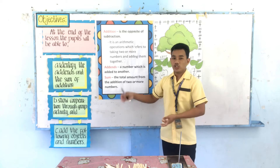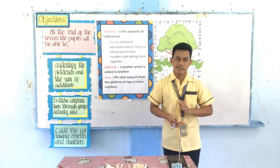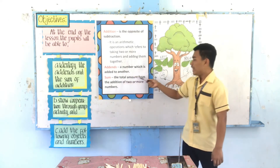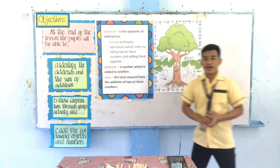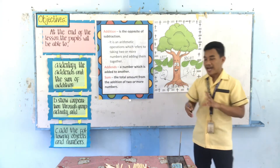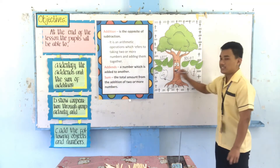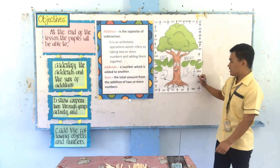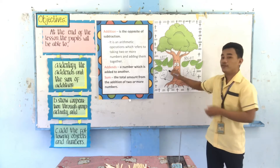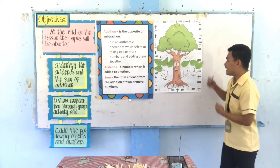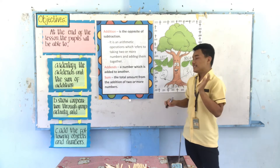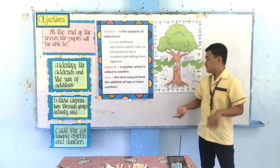Now, another one. In addition, there is what we call the sum. What is sum? Sum is the total amount from the addition of two or more numbers. Where do you think is the sum of this equation? What is the sum of four plus three? The seven? Very good — seven is the sum of the equation four plus three. Therefore, that is called the sum. What is sum again? Sum is the total amount of two or more addends.